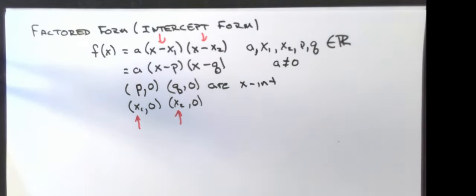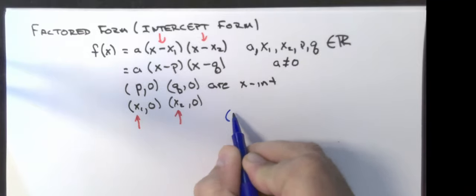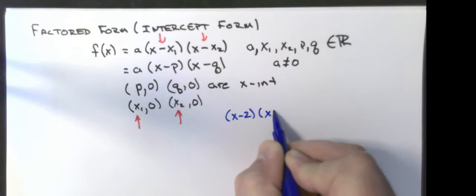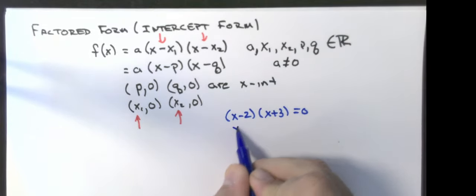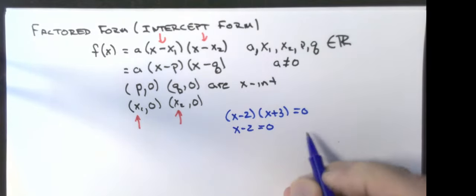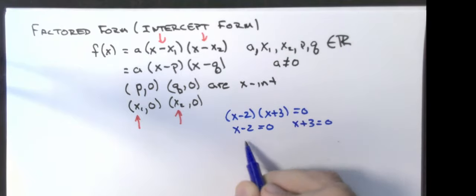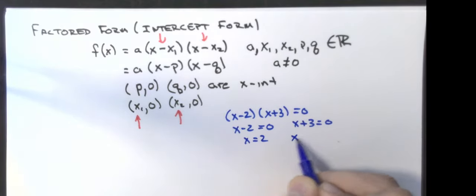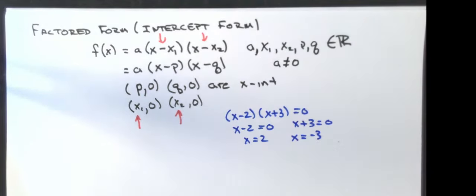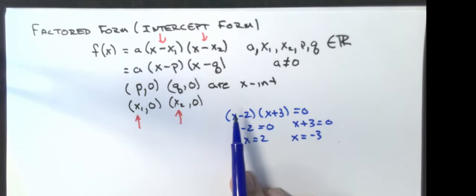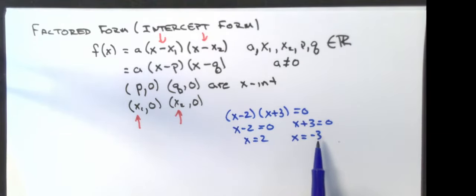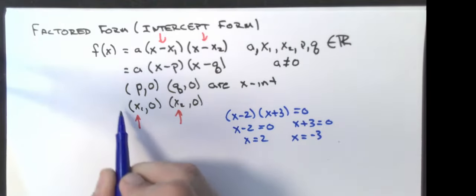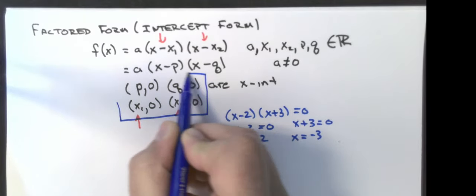For example, with (x − 2)(x + 3): setting x minus 2 equal to zero gives x = 2, and setting x plus 3 equal to zero gives x = negative 3. So when I have a minus 2 inside, the actual intercept is positive 2; when I have plus 3, my x-intercept is negative 3. That's a big thing to remember — the intercepts are the opposite of the numbers in the factored form.